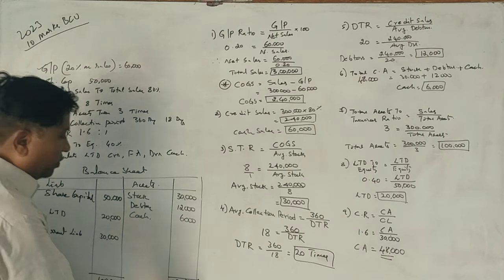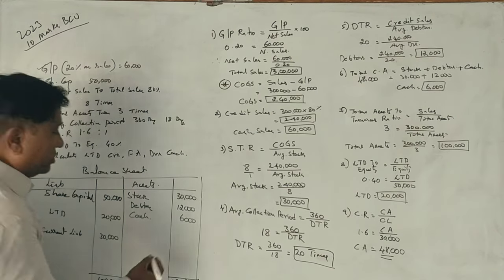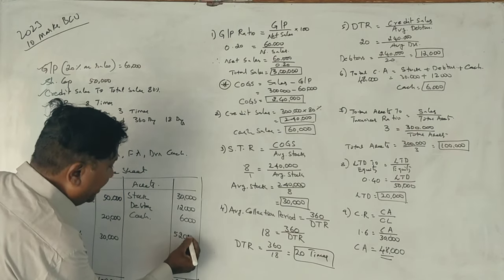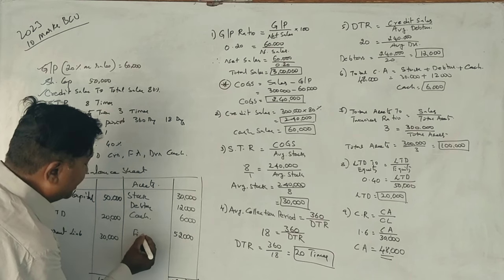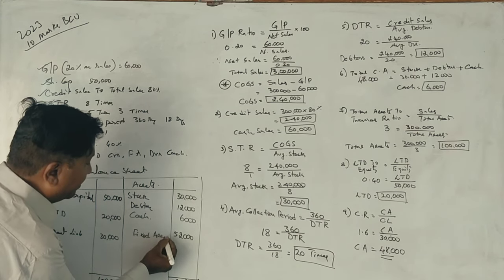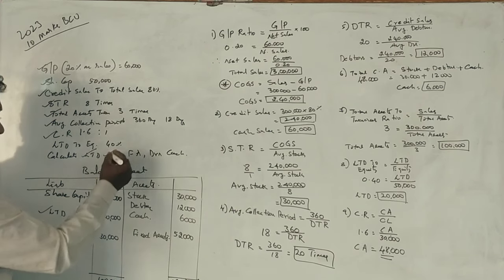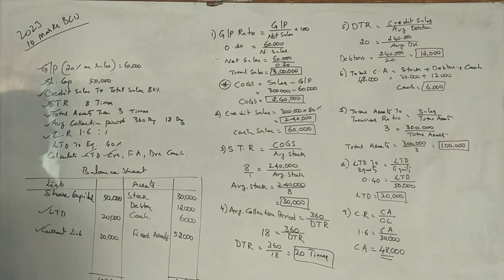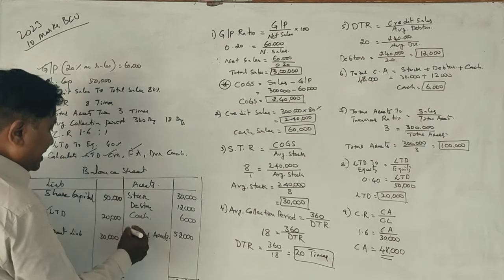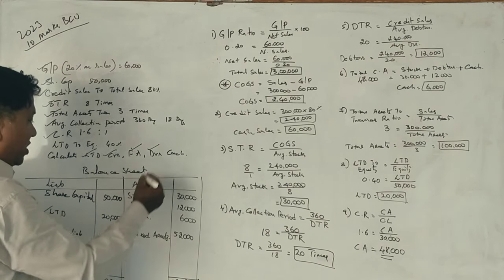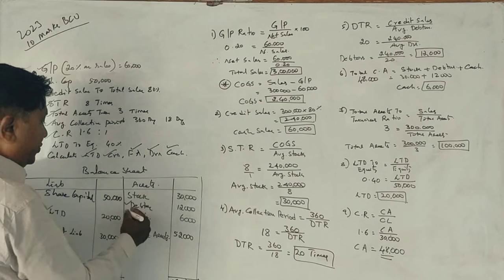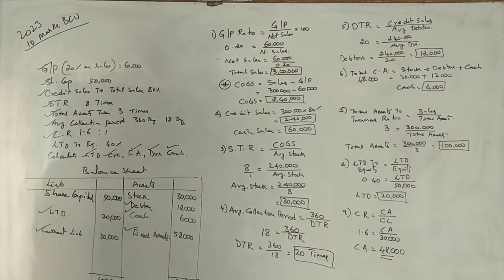Total current assets: stock Rs. 30,000, debtors Rs. 12,000, cash Rs. 6,000, totalling Rs. 48,000. Fixed assets are Rs. 52,000. Long-term debt, creditors, current liability, fixed assets, debtors, and cash are all calculated so the balance sheet tallies. This completes the 10-mark balance sheet problem.